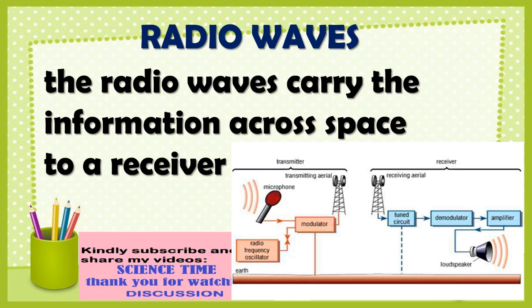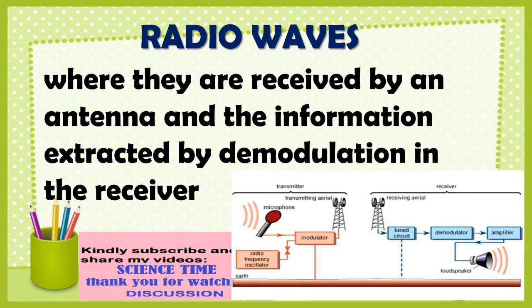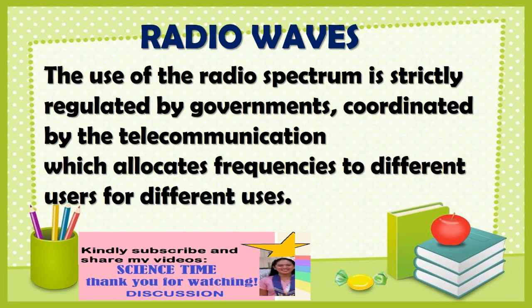They are also used for remote control and for industrial heating. Radio waves carry information across space to a receiver, where they are received by an antenna and the information is extracted by demodulation. The use of the radio spectrum is strictly regulated by the government, coordinated by telecommunication authorities, which allocate frequencies to different users for different uses.